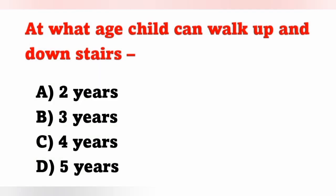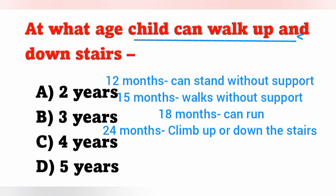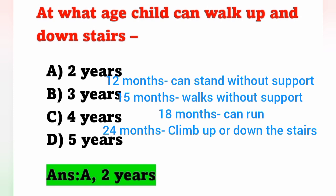Next question: At what age can a child walk up and down stairs? Options: A) Two years, B) Three years, C) Four years, D) Five years. A child can stand without support by 12 months, walk without support by 15 months, run by 18 months, and climb up and down stairs by 24 months. 24 months is two years, so option A is the correct answer.